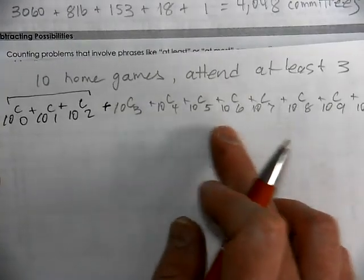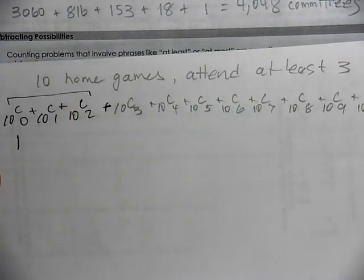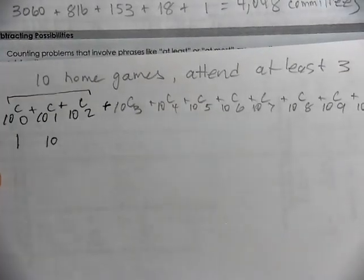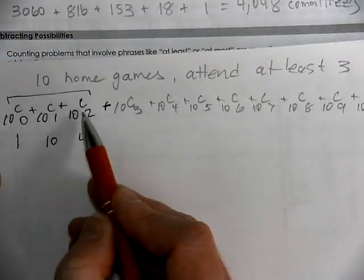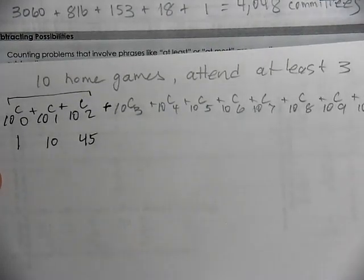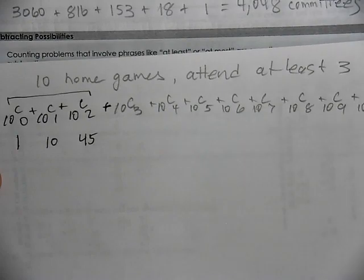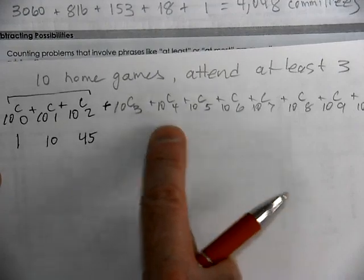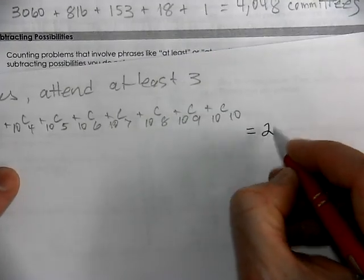If you calculate all of the possibilities: attending zero games — there's only one way you can do that, you went to none. There are 10 ways you could go to one game. There are 45 ways you could choose two games: the first and second, first and third, and so on. If you add all of these up, the shortcut is 2 to the 10th power.